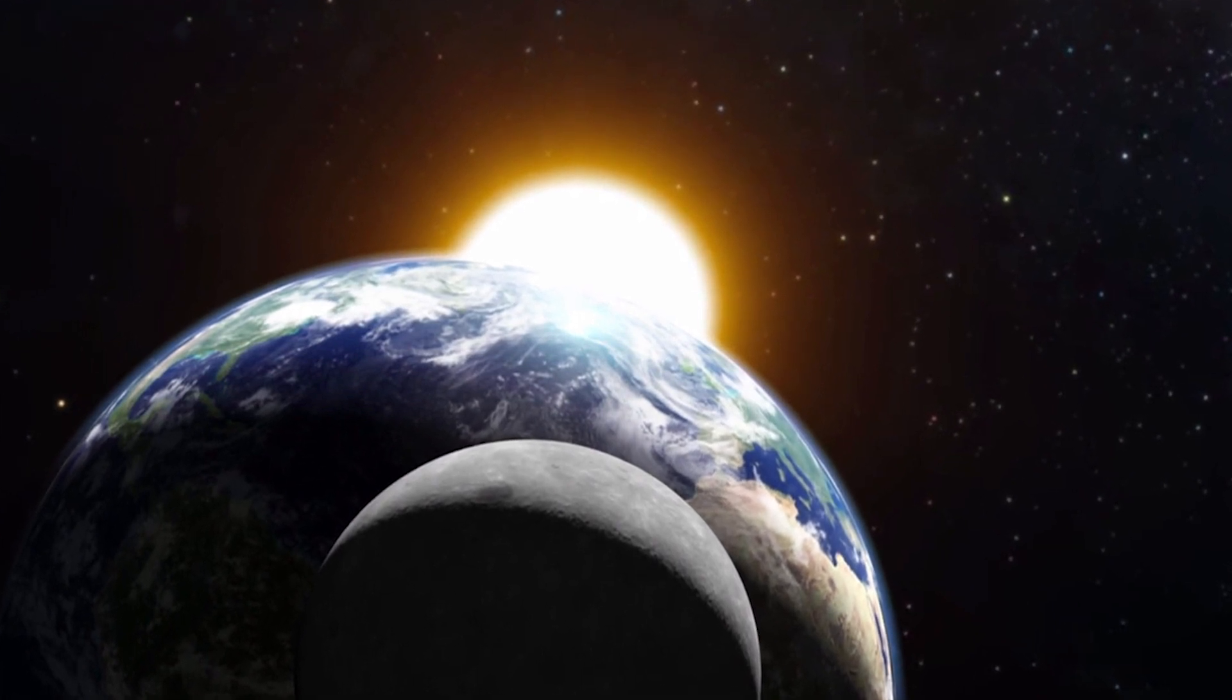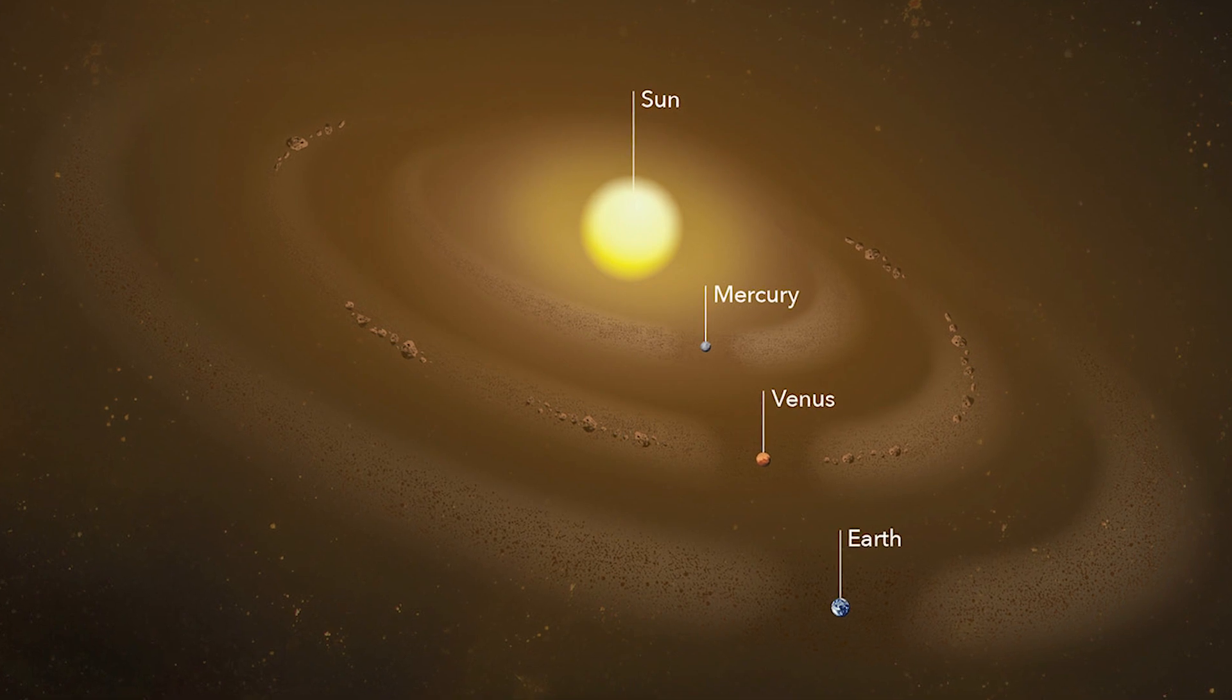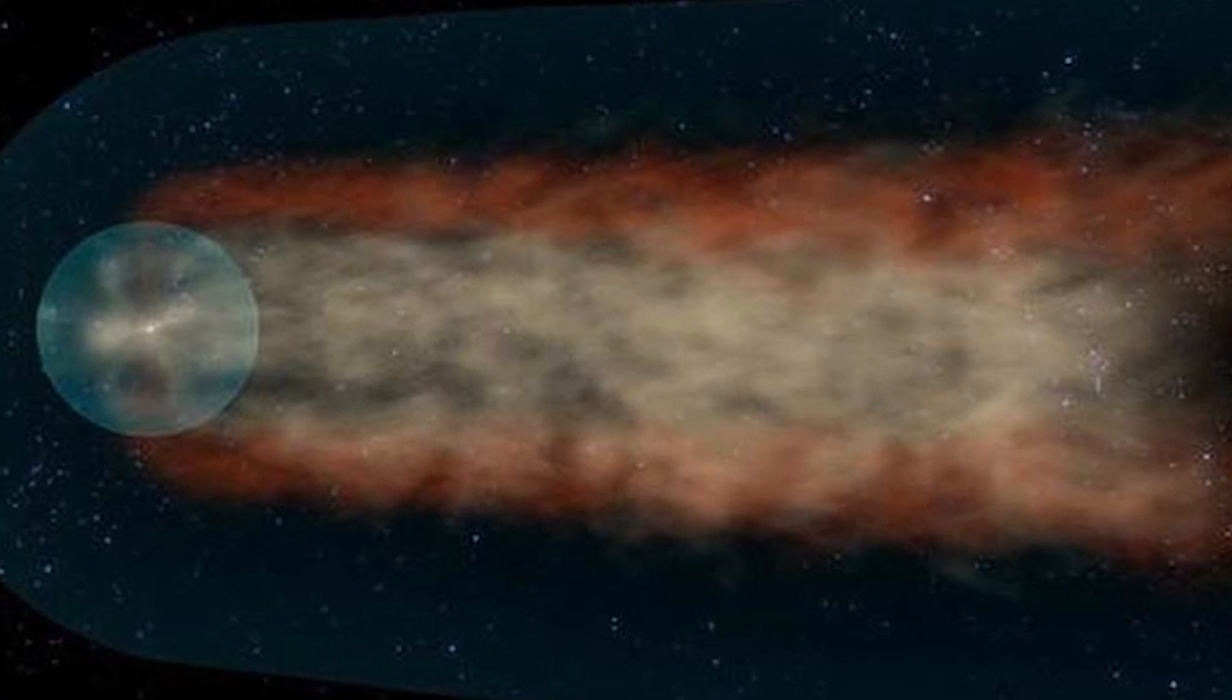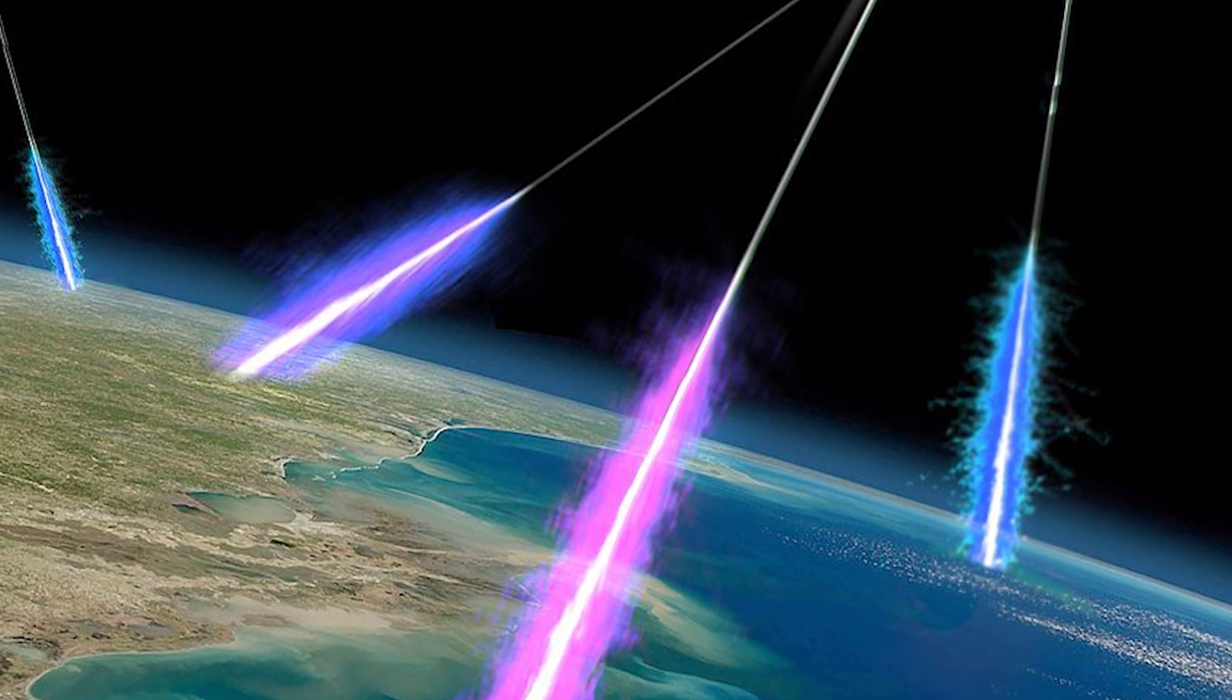That said, there still could be some effects, even from this short time without a Sun. The Sun surrounds the solar system in a heliosphere, a bubble of solar wind, which protects us from cosmic rays and dust from outside the solar system. Without it, we could see more cosmic radiation entering the solar system, which could have a number of unexpected effects.